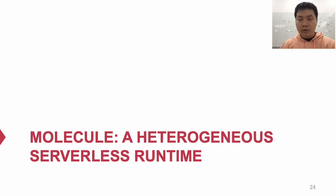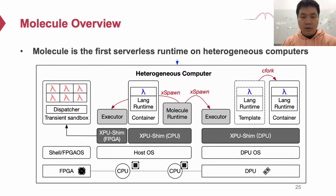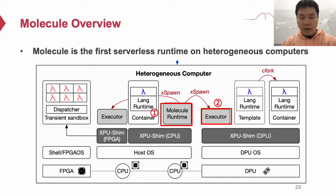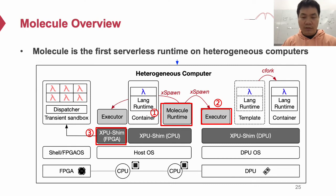Now I will introduce Molecule, the heterogeneous serverless runtime. Molecule serves serverless requests from the global manager. It can run on any PU in a heterogeneous computer and manage functions in other PUs with the XPU-SIM. Molecule will launch executors on other PUs, which are responsible for managing local function instances using the Vectorized Sandbox abstraction. The executor receives commands from Molecule, executes the commands on the local OS, and returns the results. For accelerators like FPGA that cannot launch a generic program, we start a virtual execution instance on the neighbor CPU or DPU.